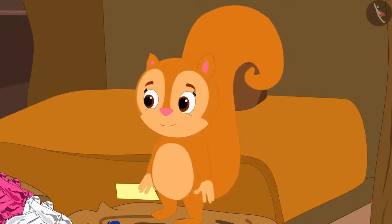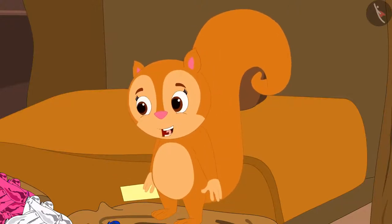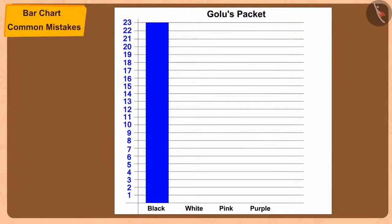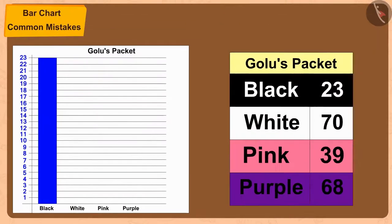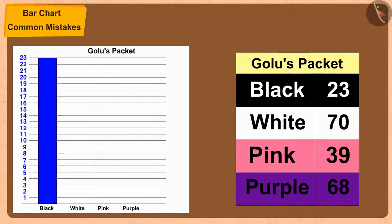Chanda explains that Golu has chosen the wrong scale. Whenever we create a bar chart, we must first find the largest number in the data. In Golu's table, the largest number is 70. Since he wrote equally spaced numbers from 1 to 23, he cannot show 70 on that scale. Instead, if we write multiples of 5 equally spaced on the scale, we can easily show 70.